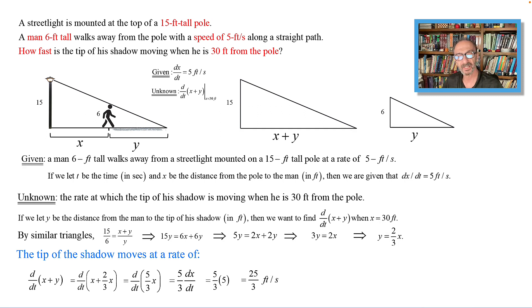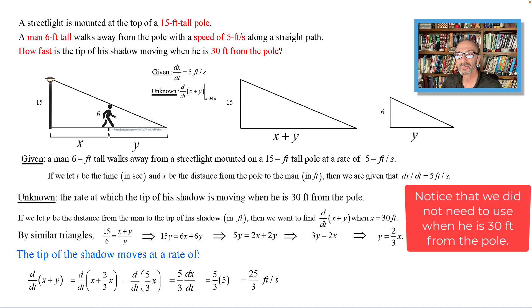The final answer is 25 over 3 feet per second. That is the answer to the question: how fast is the tip of his shadow moving when he is 30 feet from the pole? And that should do it.